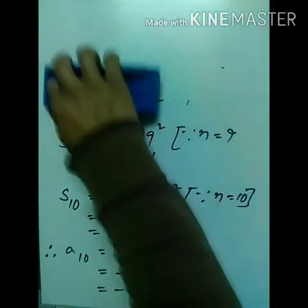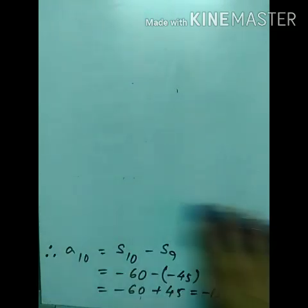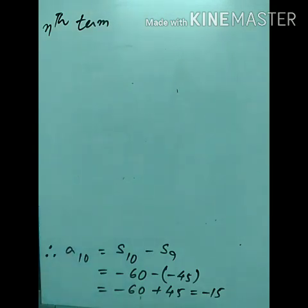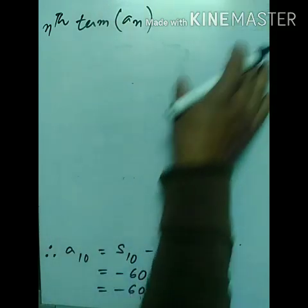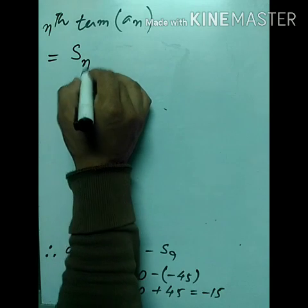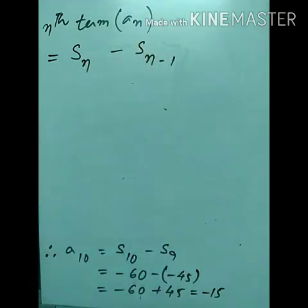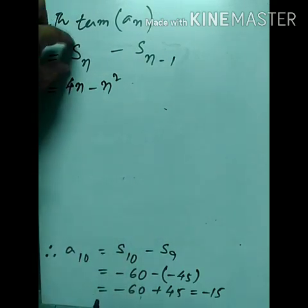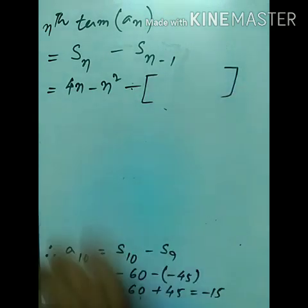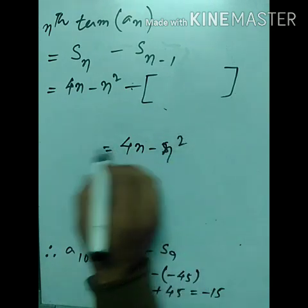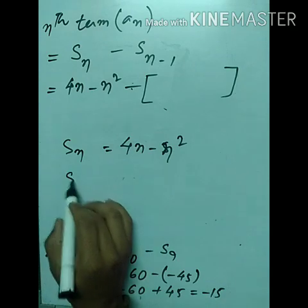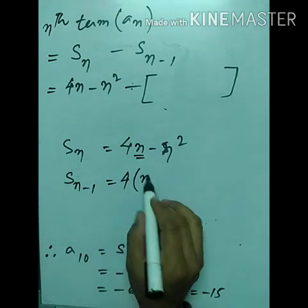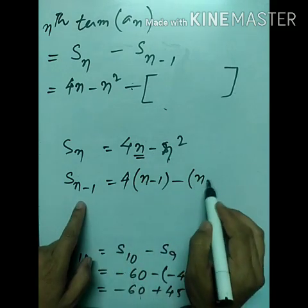Now for the nth term — please pay attention, this is one of the most important parts. aₙ = Sₙ − Sₙ₋₁. The value of Sₙ is 4n − n². Now we find Sₙ₋₁ by replacing n with (n−1): S(n−1) = 4(n−1) − (n−1)².